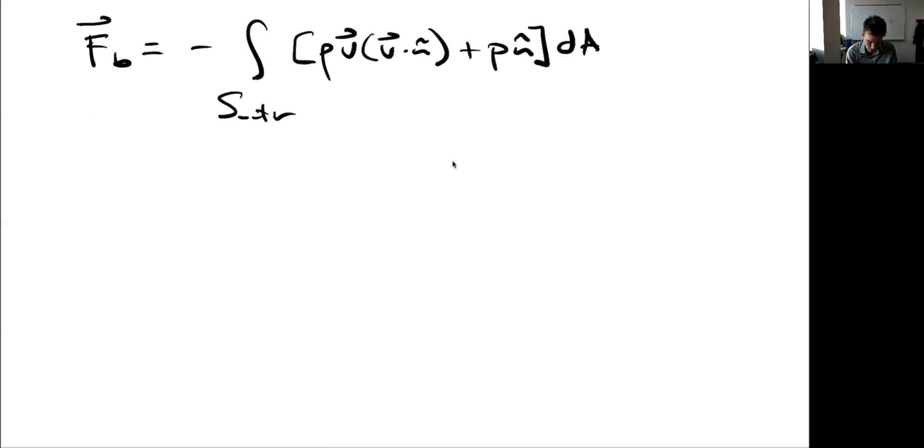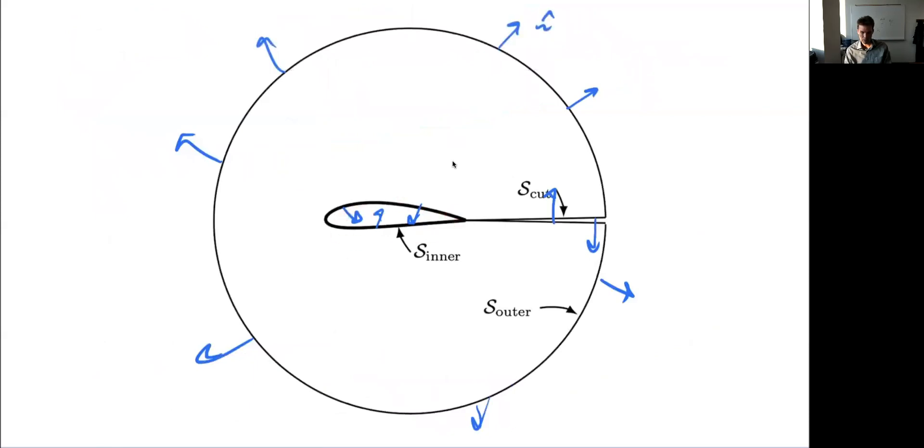So this is kind of a remarkable result, actually. It's saying that if I want to estimate the forces, lift and drag on this vehicle, this airplane or whatever, I don't actually need to know anything about the shape of the vehicle or what's happening nearby, what the pressures are on the surface. All I need to know is I can create some control volume. I didn't say anything about the shape. It could be whatever I want—a rectangle, a cube, a sphere, whatever. All I need to know is what the velocity and pressure is on this outside.